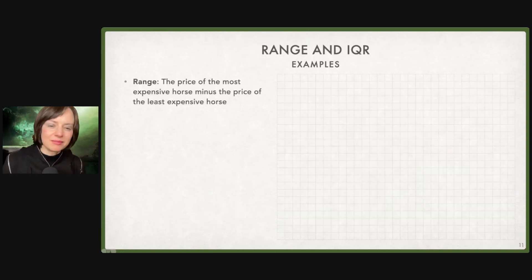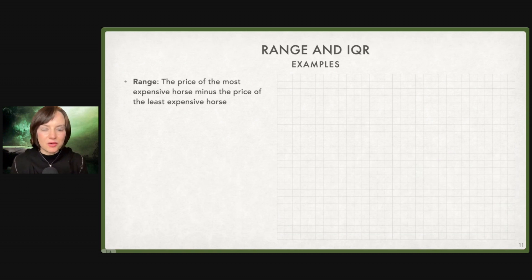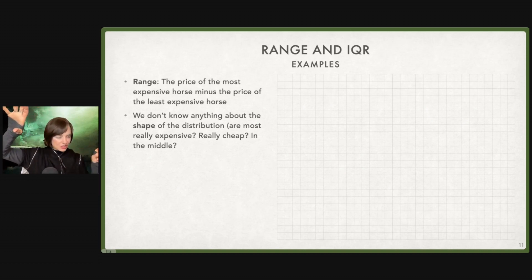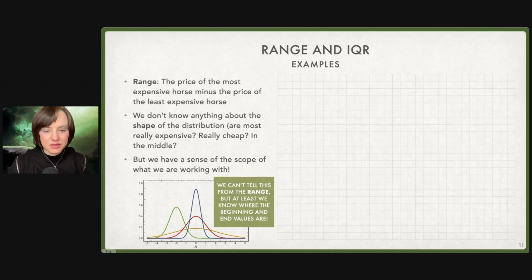A couple of examples here. Horse prices. The range is the highest value minus the lowest value. The most expensive horse minus the least expensive horse is our range. From just the range, we don't know anything about the shape of the distribution. Are most of them really expensive and one is cheap? Are most of them really cheap and one is expensive? Is it normally distributed? But it's a start. We have a sense of the scope. Horse prices range from zero to infinity, I think.